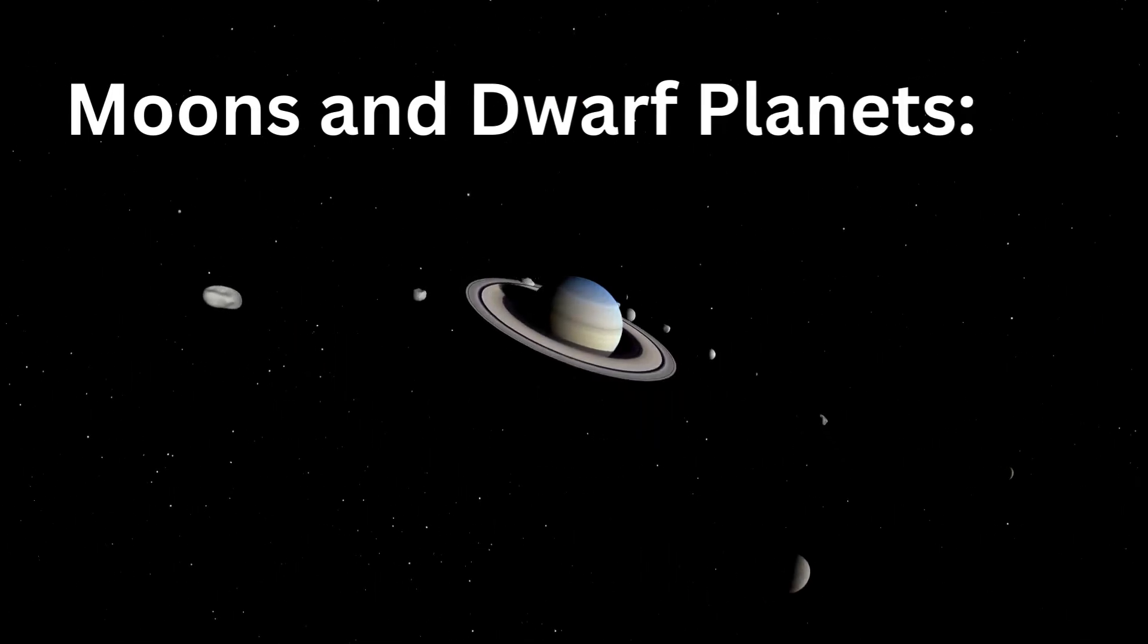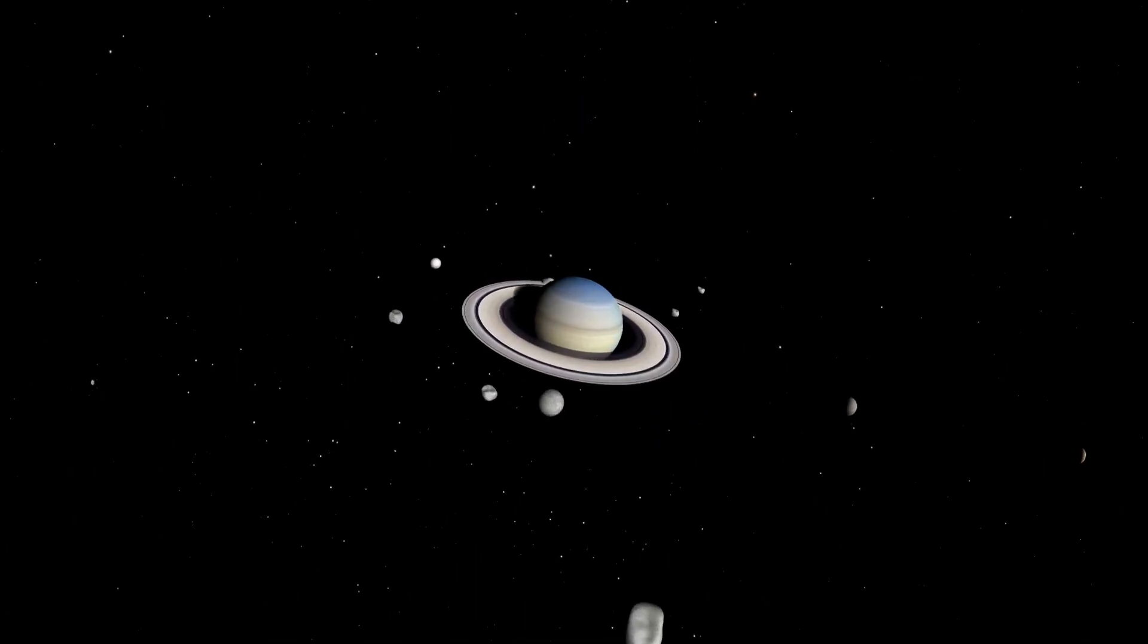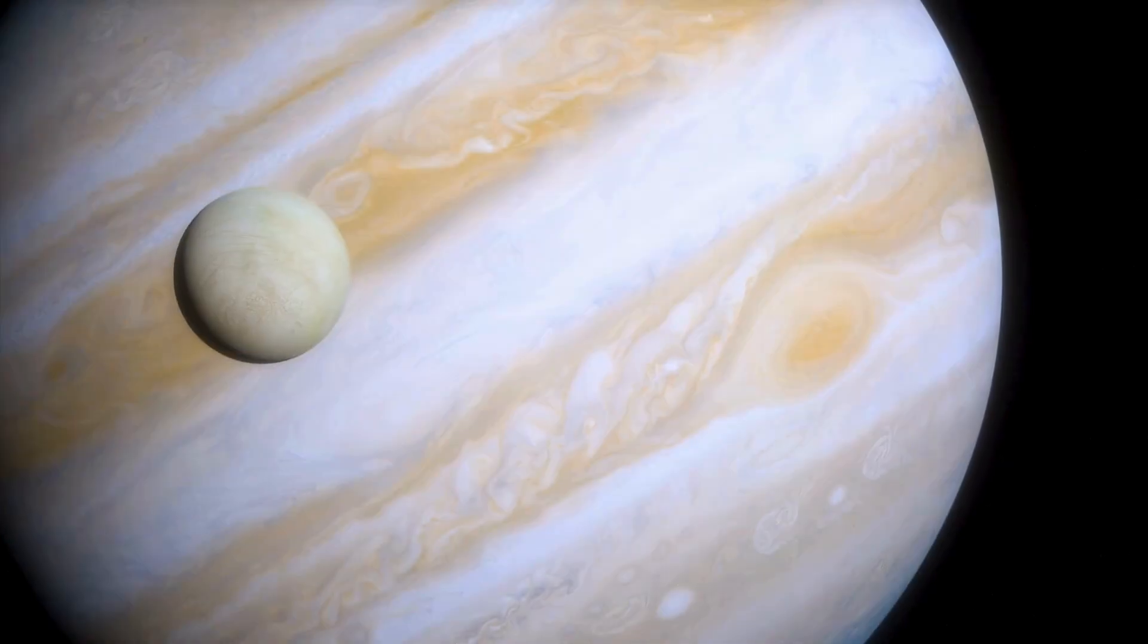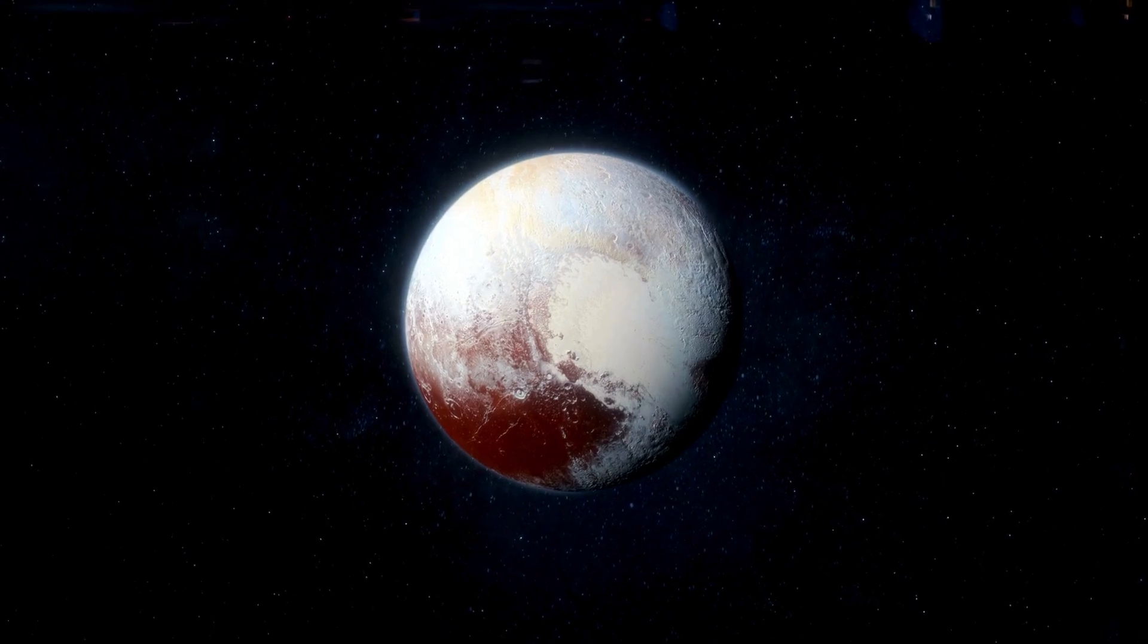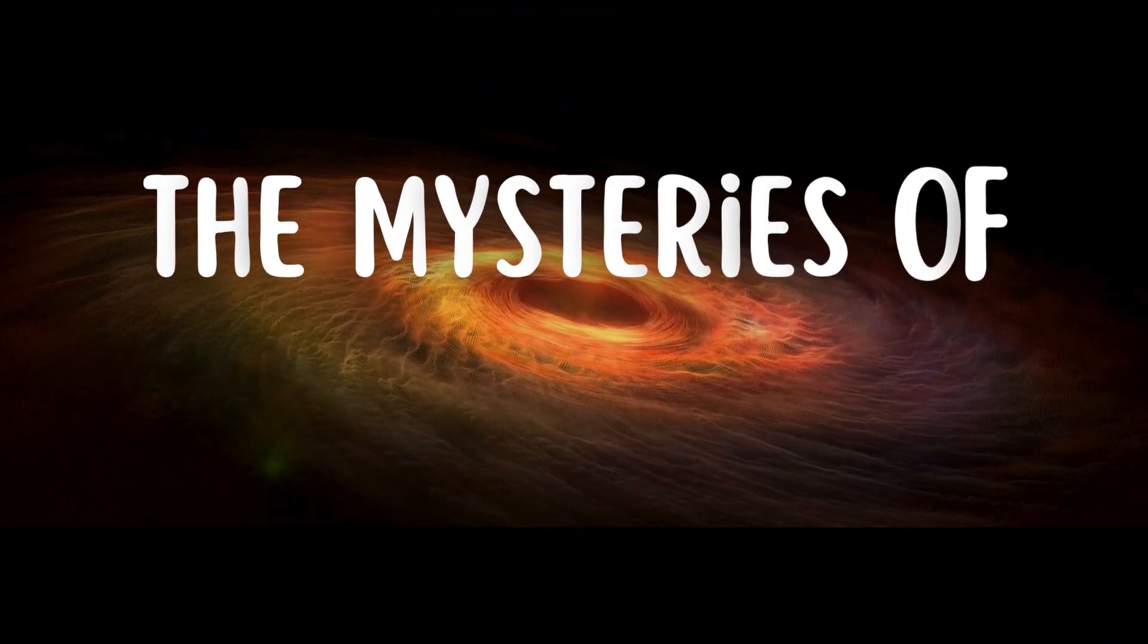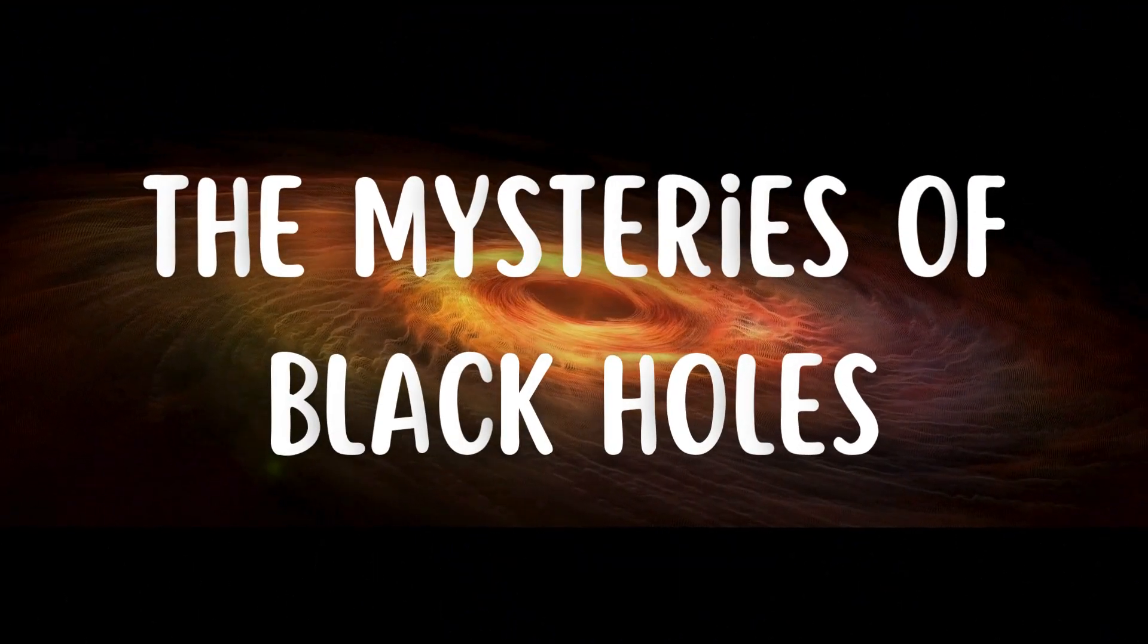Moons and dwarf planets: Our solar system also contains fascinating moons like Europa and Titan, and dwarf planets like Pluto. One of the most intriguing phenomena in the universe are black holes.